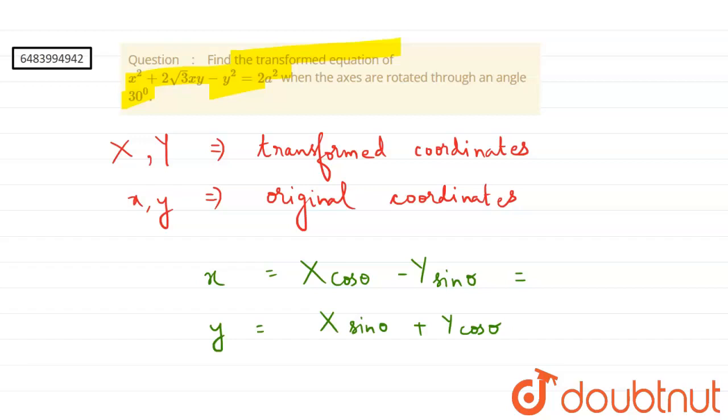capital Y sine theta, and small y is equal to capital X sine theta plus capital Y cos theta. So theta is 30 degrees, and cos of 30 degrees is root 3 by 2, and sine of 30 degrees is 1 by 2.